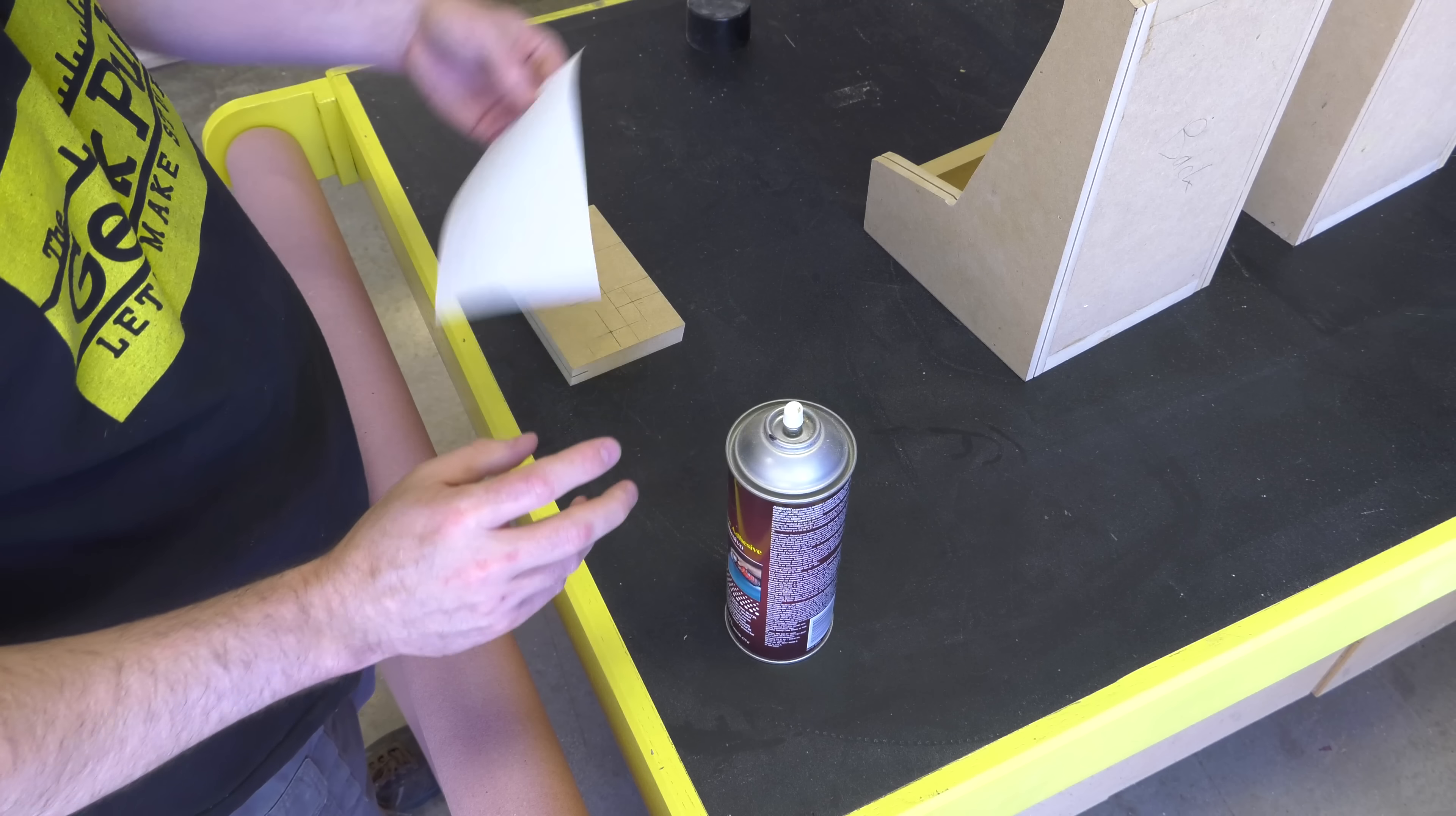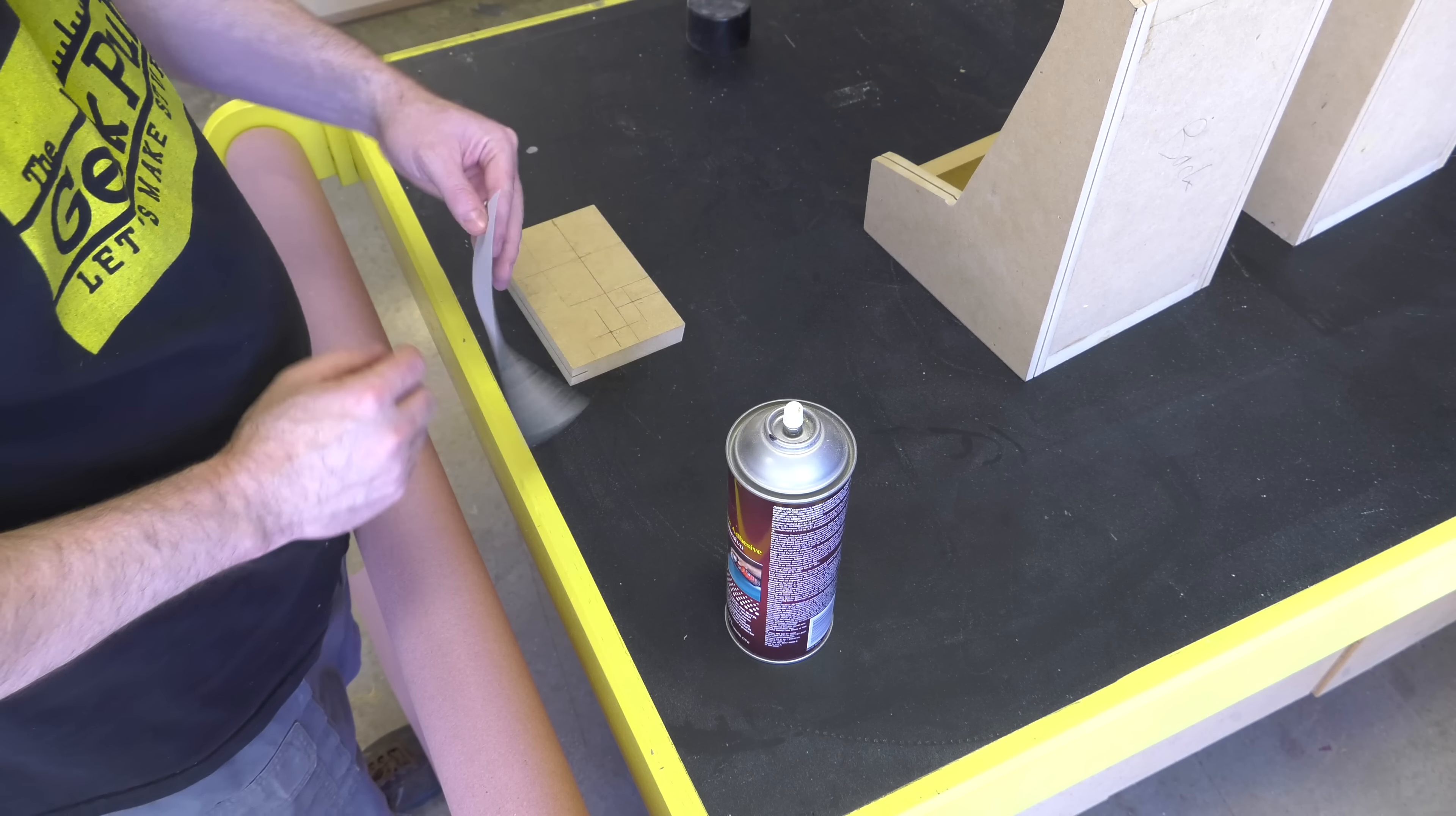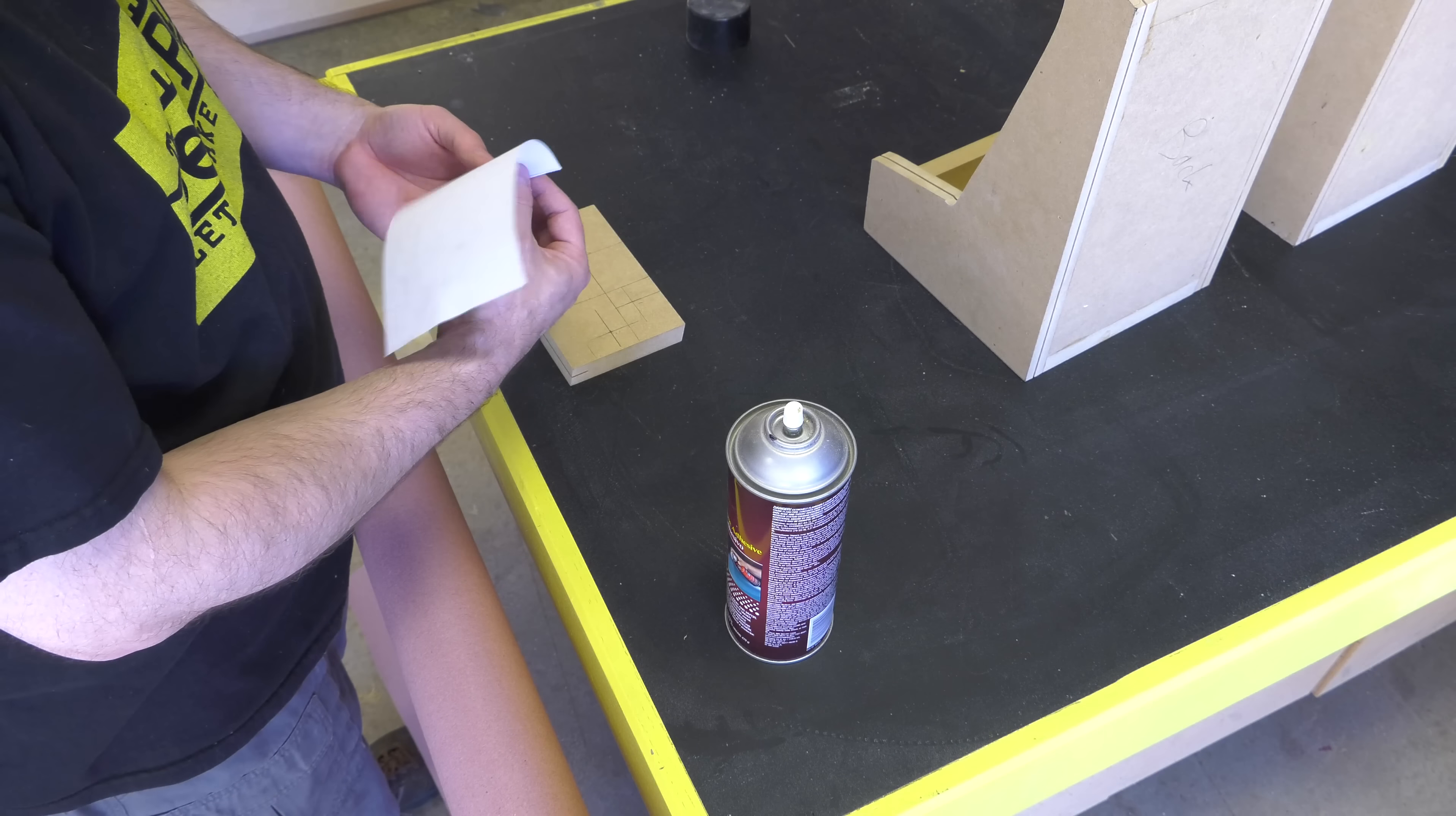Spray on some Super 77 adhesive to the drilling template and give them a few seconds to get tacky, then apply it to the control panel. I used a Forstner bit to drill out the templates. I have a video on using the templates at thegeekpub.com you might want to check out.